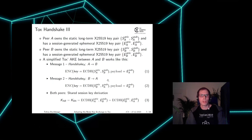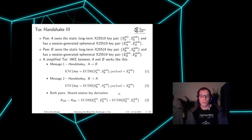Then Bob responds with a handshake message to Alice. Bob uses his static private key and Alice's public key and encrypts his ephemeral public key. After both peers successfully receive each other's handshake messages, they can use the exchanged ephemeral public keys to calculate the same shared secret session key — Alice using her ephemeral private key, and Bob using his ephemeral private key, combined with the other peer's ephemeral public key.